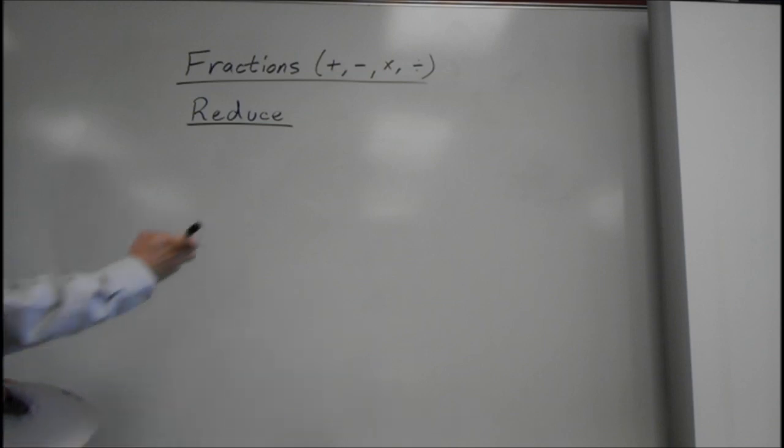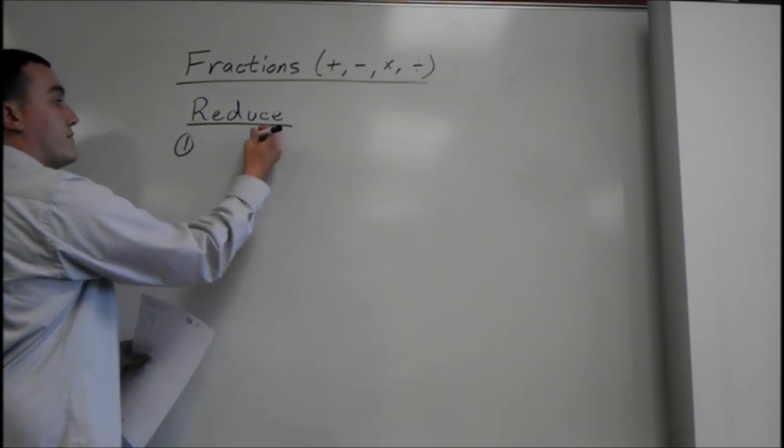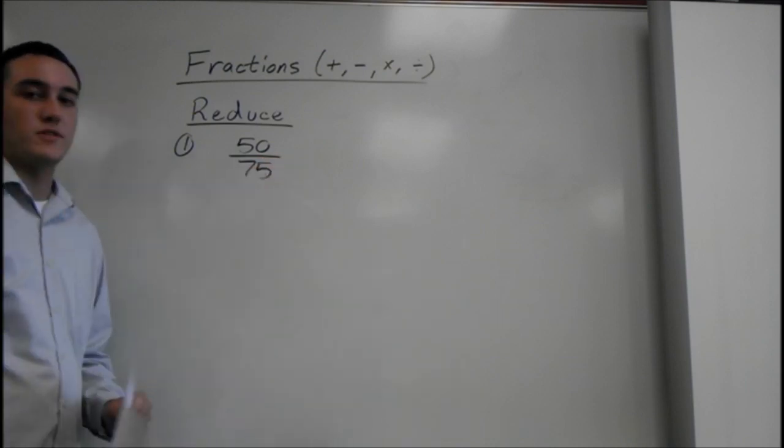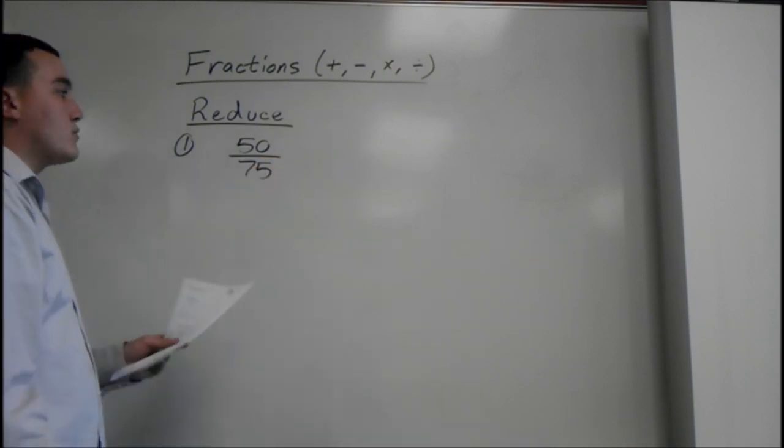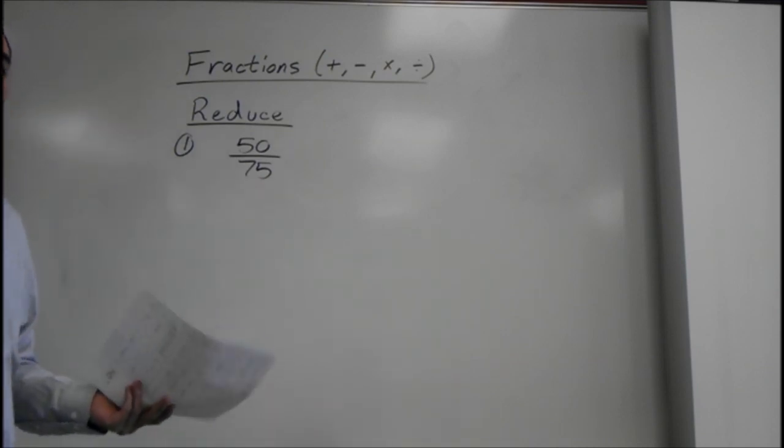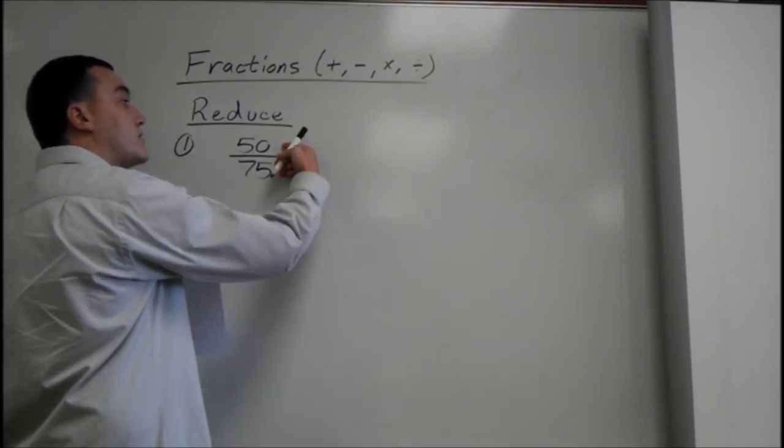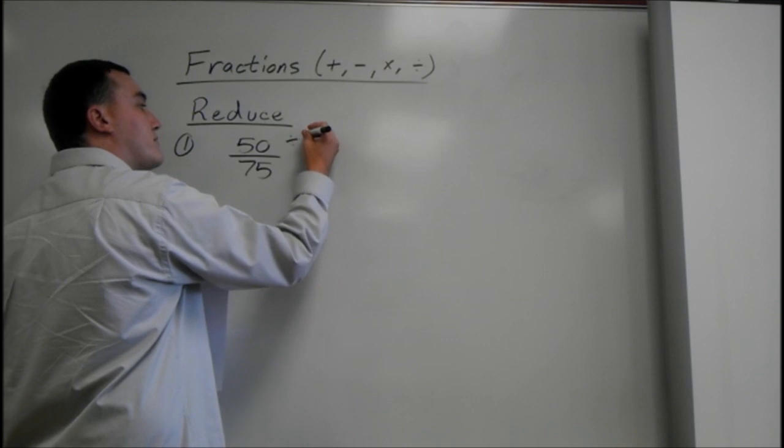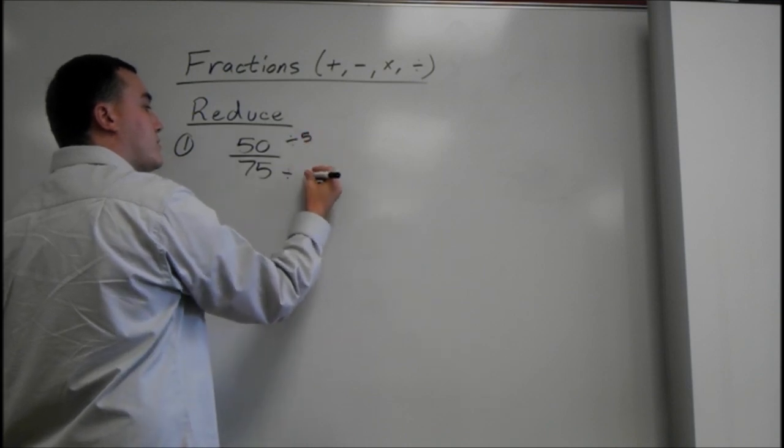Alright, so for example, number one, say we have 50 over 75 and we want to reduce it. Now, what we're looking for is what goes into both of these numbers. You do want to think of the highest thing, but if you don't know it, you can always do it by smaller increments. Say we do know 5 goes into both of these. So what we can do is just divide it by 5.